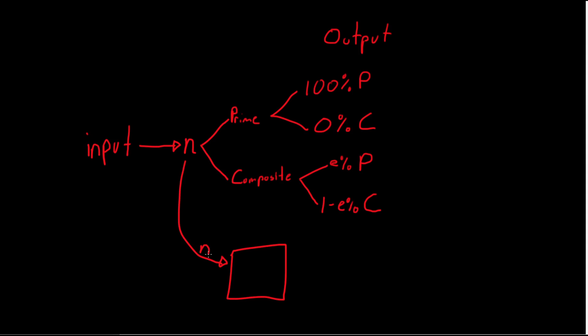From this, we can say that our algorithm will either prove that the input number is composite with 100% certainty, or else it will output prime with some small chance of error e that we want to make negligible, and therefore we say it is probably prime.